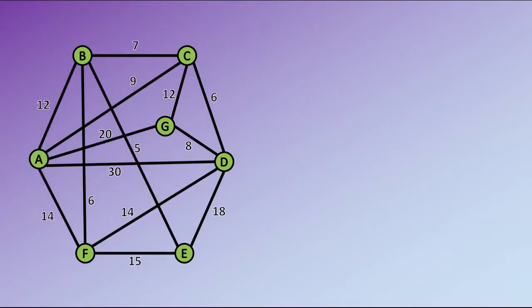The route inspection algorithm allows us to find a route which goes along every edge at least once. We can find the minimum route to do so. Our first stage is to identify which vertices are odd. I've indicated in green the order of each of the different vertices.